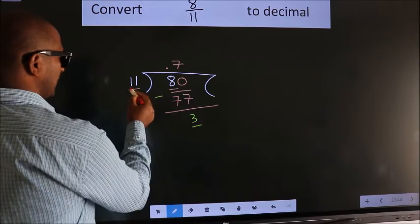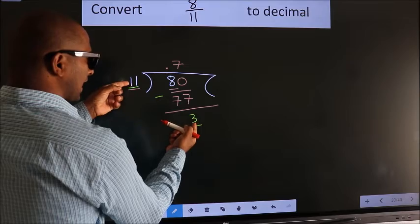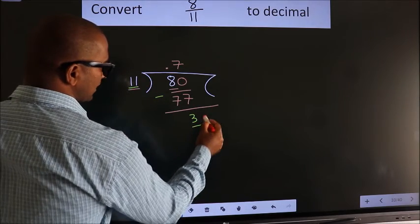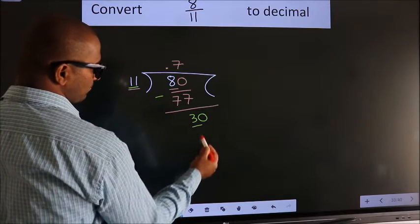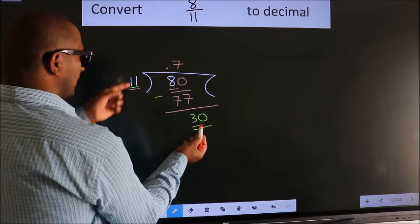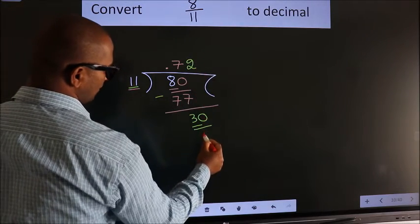Here we have 3, here 11. 3 is smaller than 11, and we already have the decimal. So this time we can directly take 0. So 30. A number close to 30 in 11 table is 11 2's, 22.